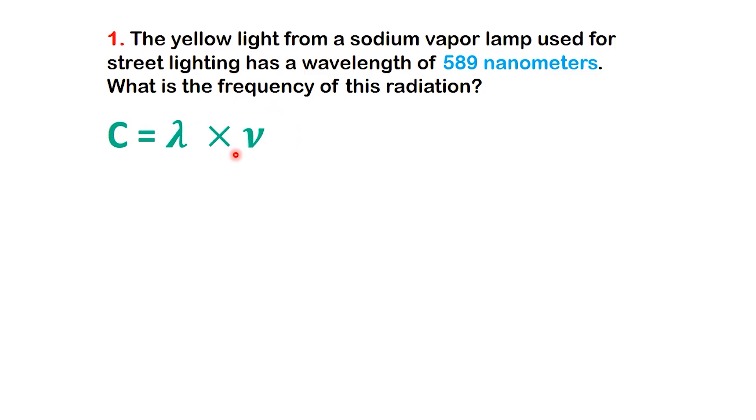We know the relationship between wavelength, frequency, and the speed of light is C equals lambda times nu. The formula works only if the wavelength is in meters. So let's convert 589 nanometers into meters using the conversion factor method.